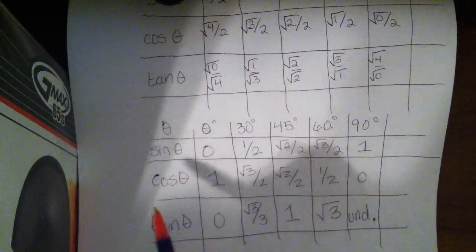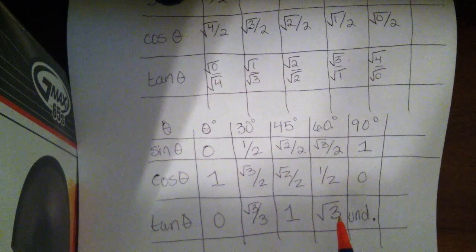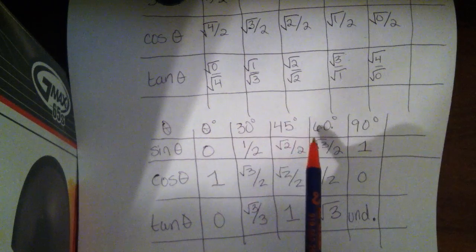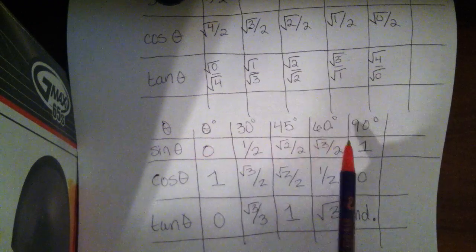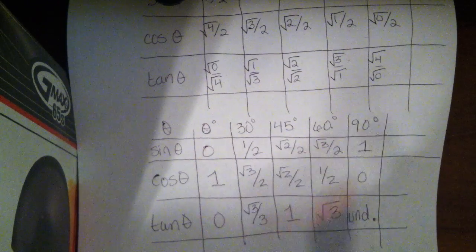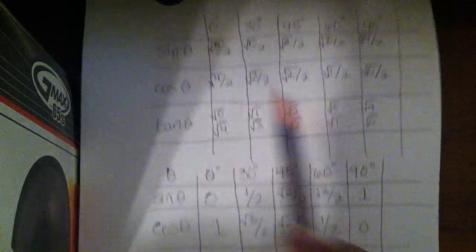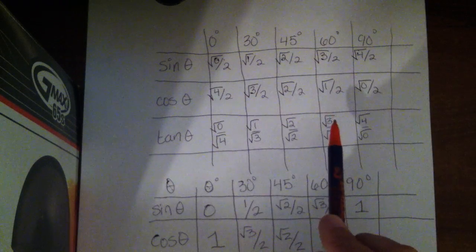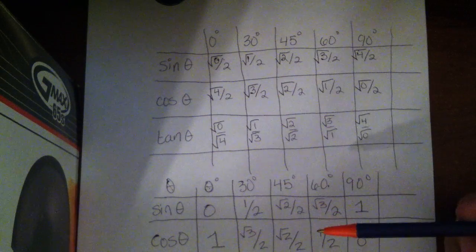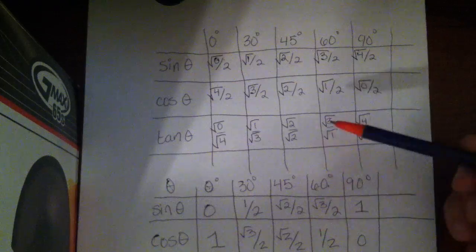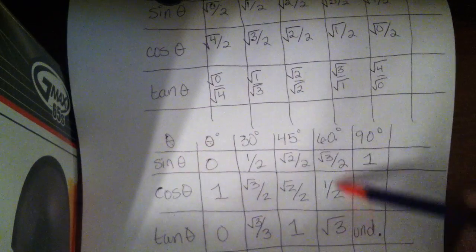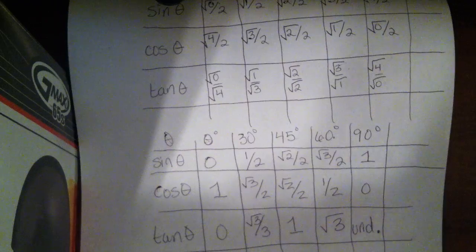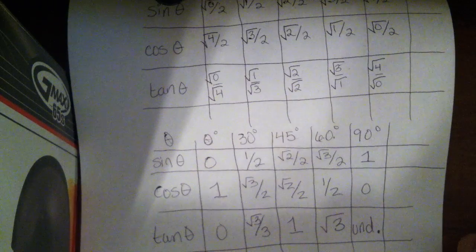So this is our table for sine, cosine, and tangent of our three special angles in quadrant 1, as well as those boundary angles where quadrant 1 starts and where quadrant 1 ends. They follow this really easy pattern, and then if we just simplify the values once we get the pattern written out, we can very quickly have all of those values in front of us to use and do whatever we need to with them.